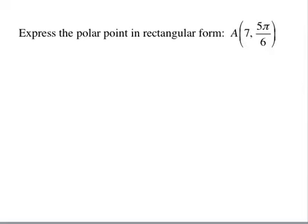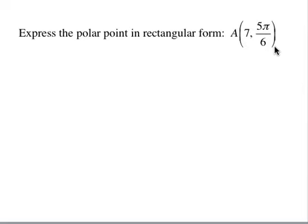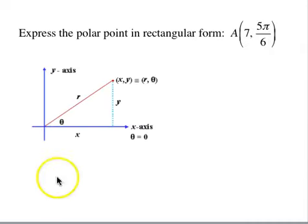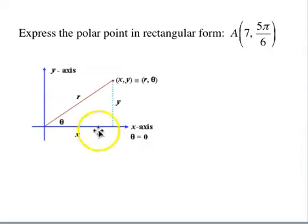The next question is to express a polar point in rectangular form. We have r=7 and θ=5π/6 — just to visualize that, it will be in the second quadrant. Here's our relationship between x, y, r, and θ, using various geometric relationships.